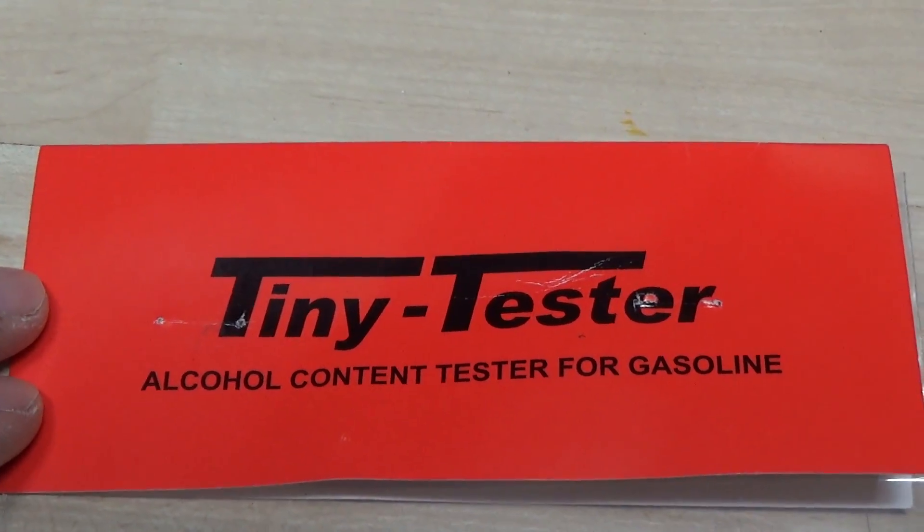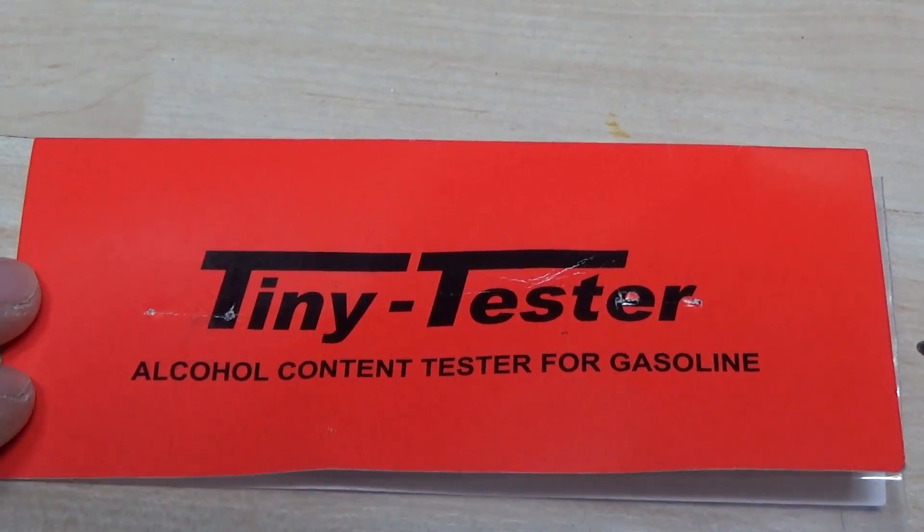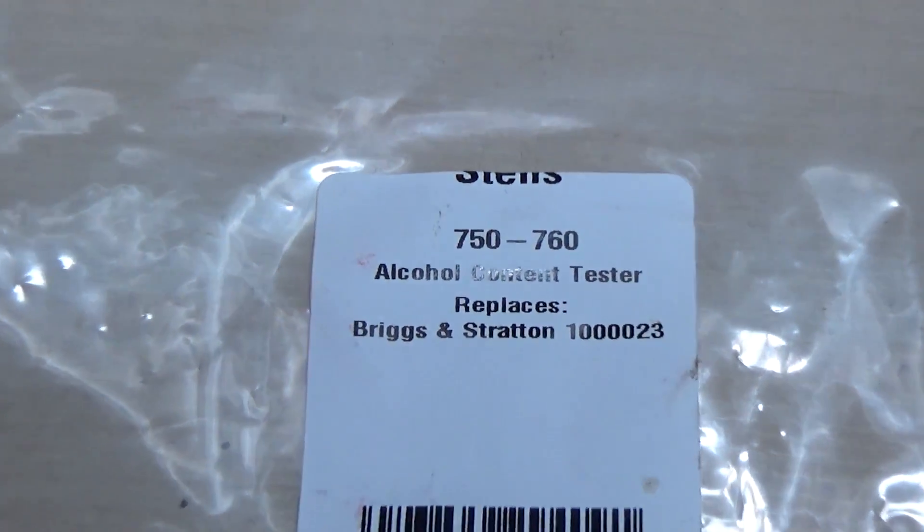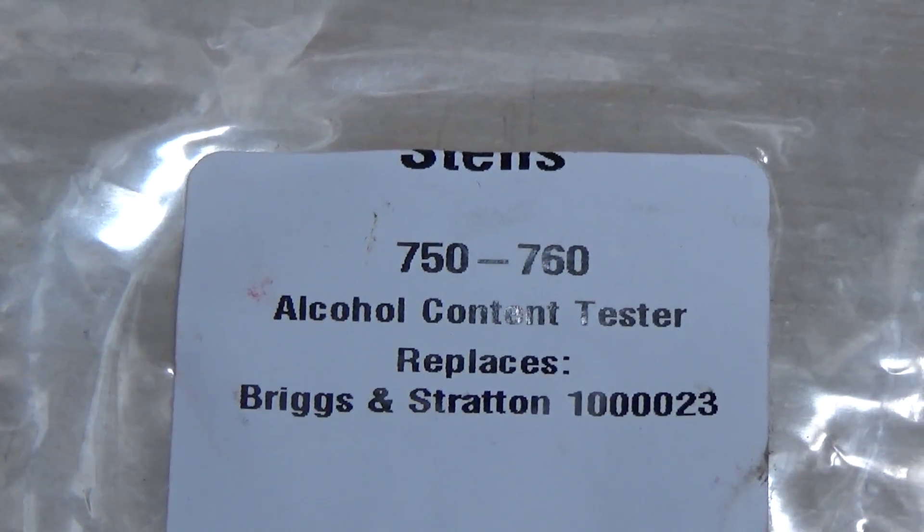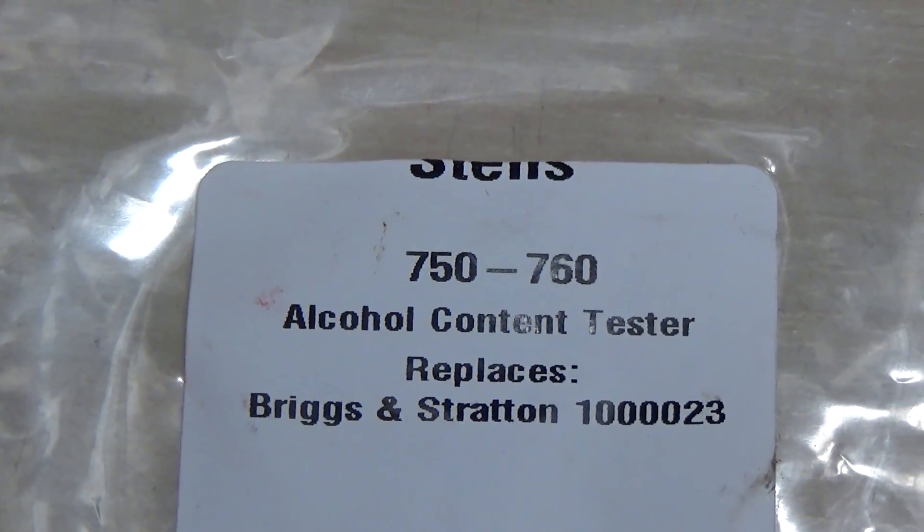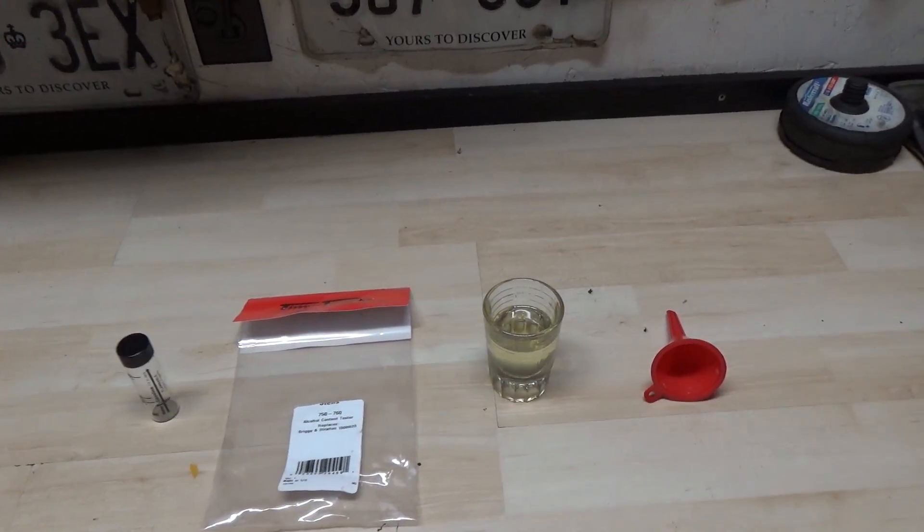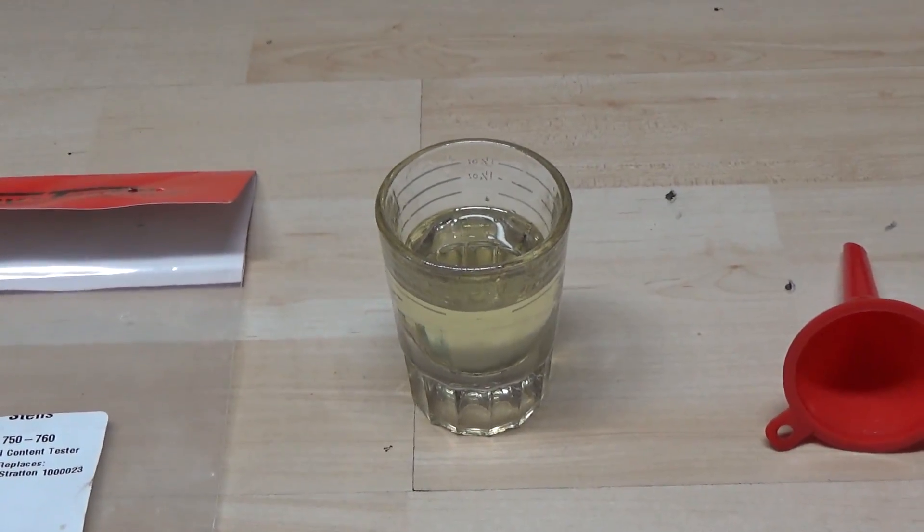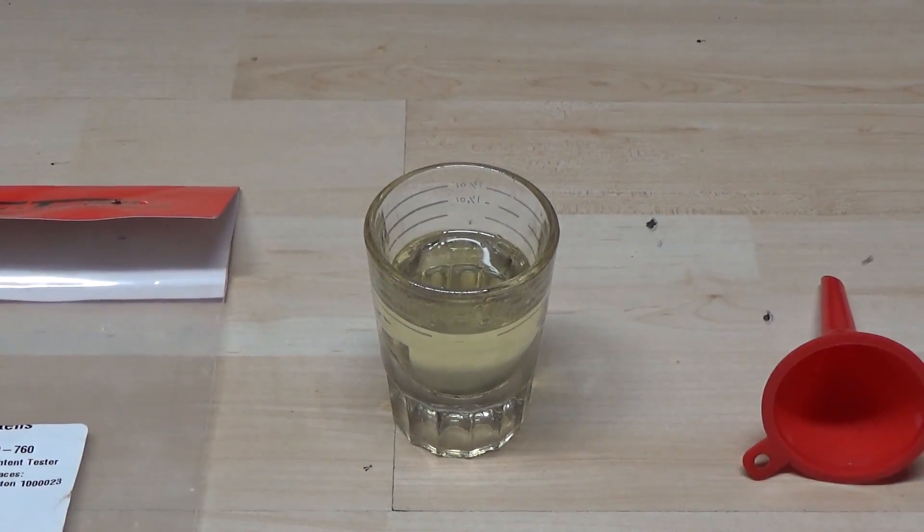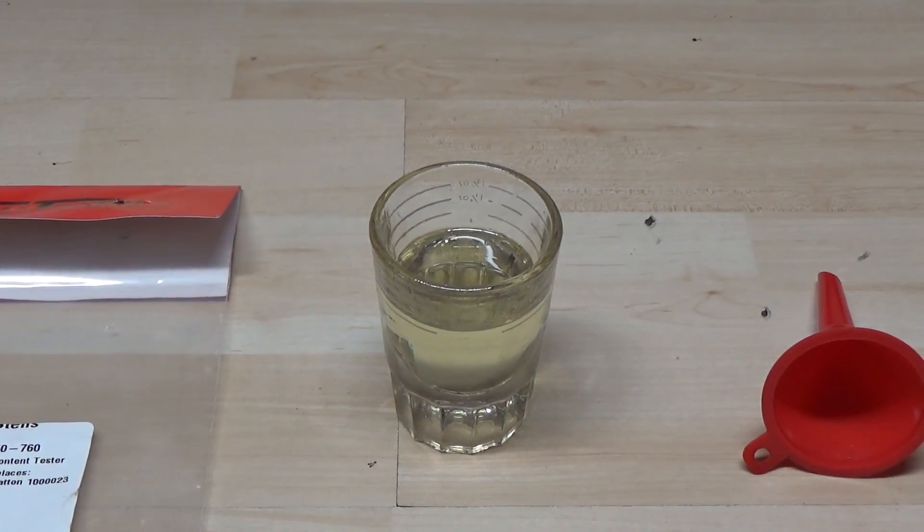This kit is made by Tiny Tester. It is an alcohol content tester for gasoline and we purchased this from Stenz and the Stenz number is 750-760. I have right here just a shot glass filled with some 91 octane fuel that I purchased at Canadian Tire here in Ontario, Canada.